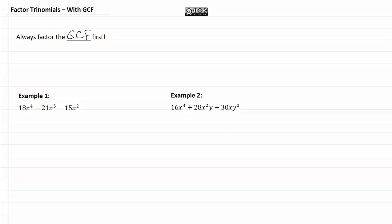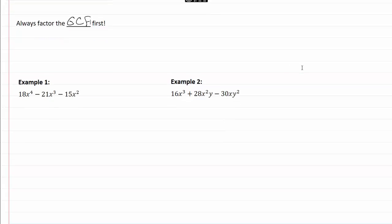If you are having problems factoring a trinomial, it probably means that there was a greatest common factor that you could pull out. Let's take a look at our two examples here.